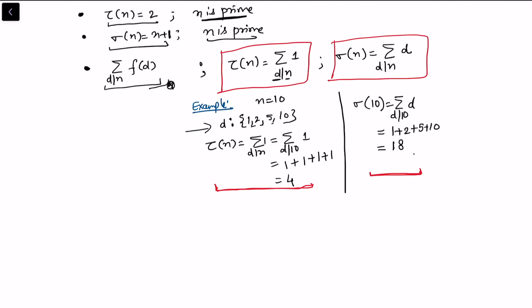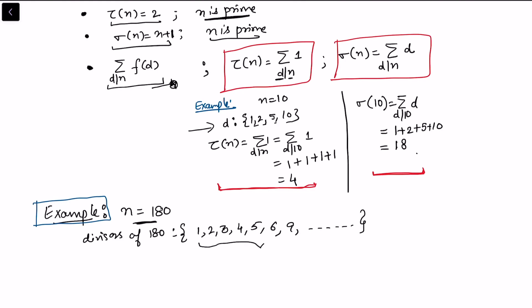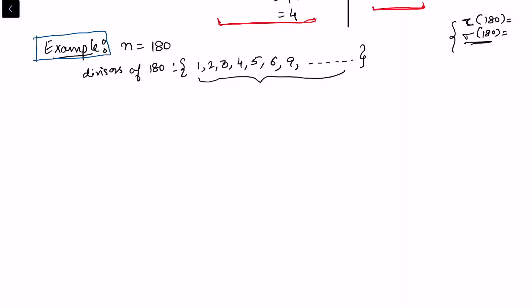For smaller values it is easy to write down the divisor set, but consider a larger number like n = 180. Listing all positive divisors of 180 — 1, 2, 3, 4, 5, 6, 9, and so on — is tedious. So we are searching for a way to find the divisors and then sum them to find sigma(180) and tau(180) efficiently.